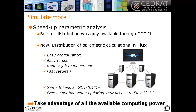And if you didn't have any distribution tokens, you will get some free evaluation when updating your license to Flux 12.1. When you update your license, directly in Flux you will be able to test the parametric distribution of computation. So it's very important that you take advantage of all the available computing power of your machine.